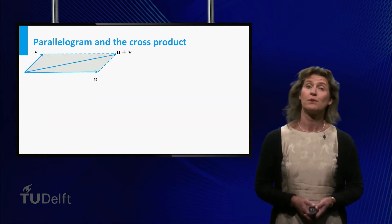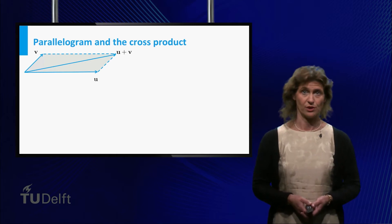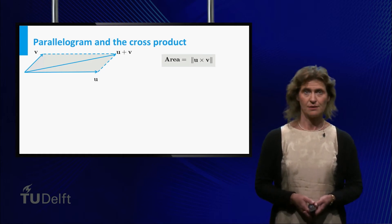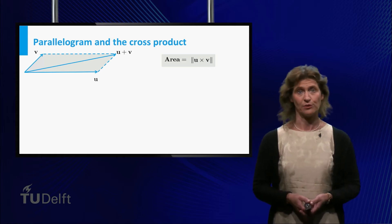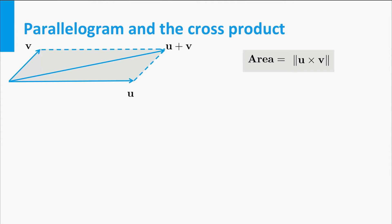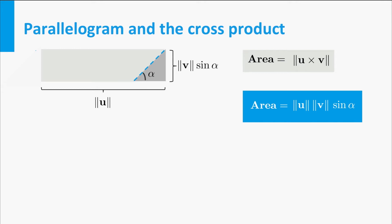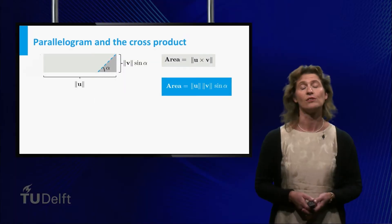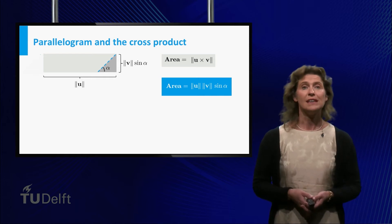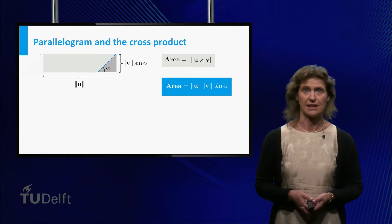Now you also have to remember a geometric fact about the cross product. If you form a parallelogram by the vectors u and v, you can compute its area by taking the length of the cross product of u and v. Let's take a closer look at the figure on the slide. You can compute the area of the parallelogram by transforming it into a rectangle. The height of the triangle cut off from the left-hand side equals the length of v times the sine of the angle alpha. This means that the area equals the length of u times the length of v times the sine of alpha.